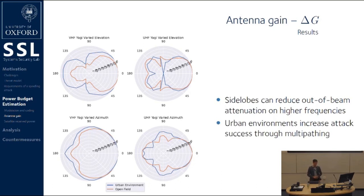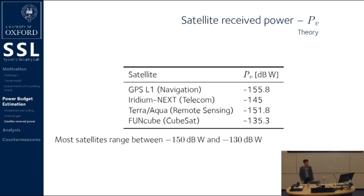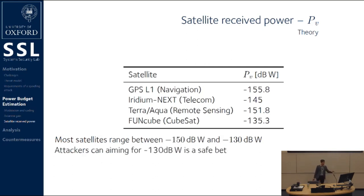Now we consider the third factor, which is the satellite received power. We looked at the received power of a number of different satellites across different classes — from navigation to remote sensing — which have very different channel properties, and even cube satellites. Most satellites tend to range within a fairly narrow band of received powers, because for a given transmit power and channel properties, the designers want to squeeze as much data out of the channel as they can reliably get. We end up with a pretty consistent received power across all satellite classes. Therefore, an attacker, if they want to be lazy, can aim for about negative 130 dBW in order to out-compete the victim power, and that gives them the baseline upon which they compensate for antenna gain attenuation and modulation encoding.